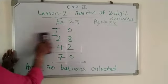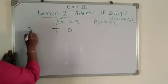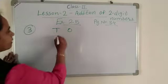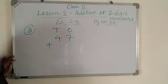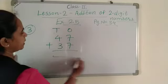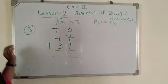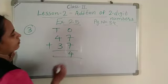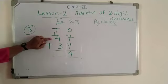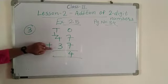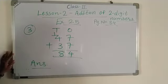Number 3: 47 in group A plus 37 in group B. Total all together: 7 plus 7 equals 14. Write 4 here, 1 carry forward to tens place. Then 1 plus 4 equals 5, 5 plus 3 equals 8. Total 84 houses.